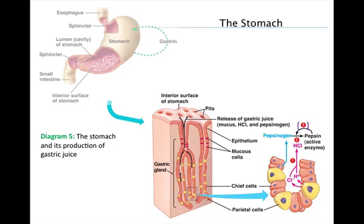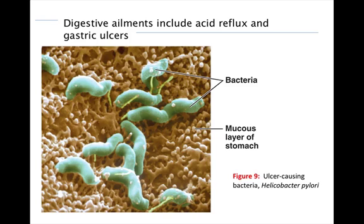Pepsin is important because it begins the chemical digestion of proteins, splitting polypeptides into smaller polypeptides, priming them for further digestion in the small intestine. The low pH of the stomach kills most microbes, but not the acid-tolerant Helicobacter pylori. This bacterium burrows beneath the mucus and releases harmful chemicals, causing a localized loss of protective mucus and damage to the stomach lining. White blood cells move in to fight the infection, leading to mild inflammation called gastritis. Gastric ulcers develop when pepsin and hydrochloric acid destroy cells faster than they can regenerate, potentially eroding the stomach wall and causing life-threatening infection or internal bleeding.